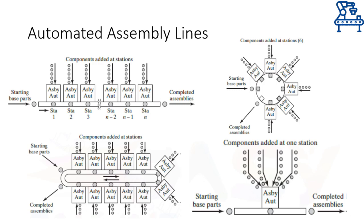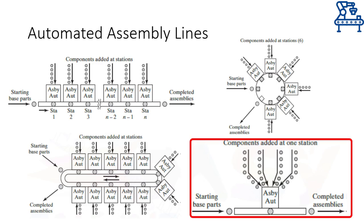Typically, every workstation will add one component to the base work part, and so as the work part reaches the last station, all required parts have been assembled onto the base part to get the final product. Rarely, more sophisticated, complex and expensive assembly machines take in multiple components from the feeding mechanism and add them on the base part at one station, saving time and space on the factory floor.